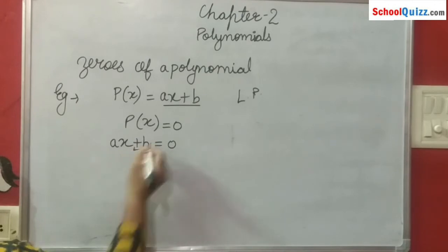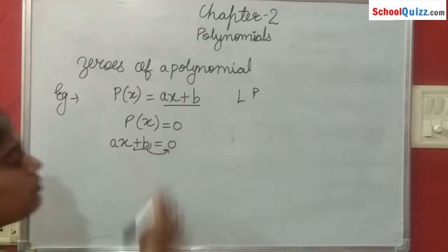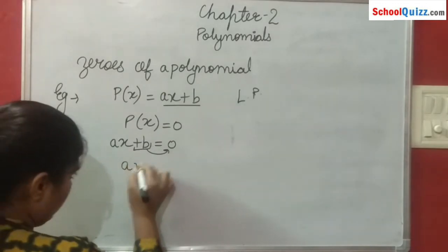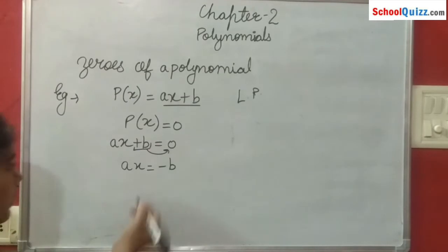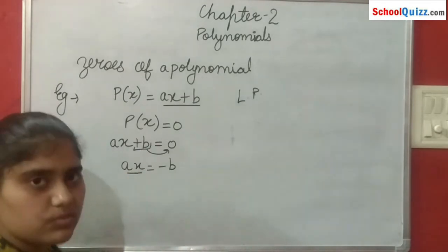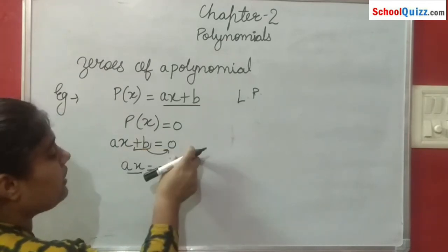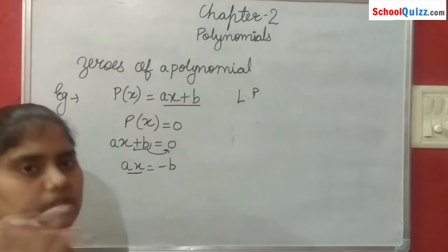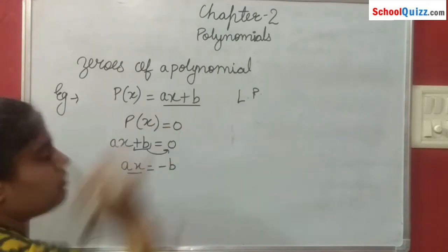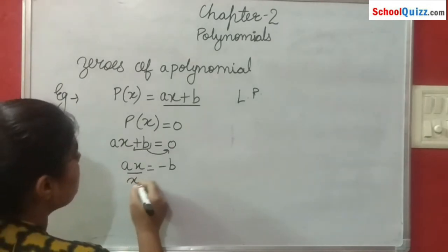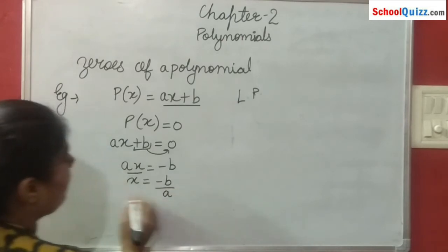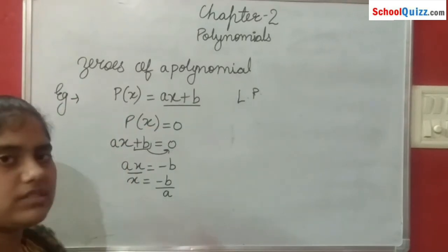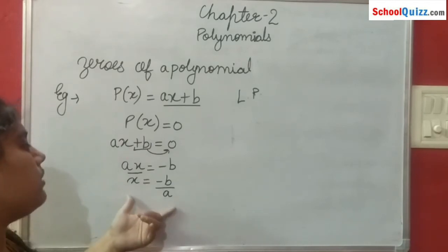Now the constant term B is on one side — it is positive B. When it moves to the other side it will become negative B, so Ax equals to minus B. Now Ax means A is in multiplication form with x. When multiplication moves to the other side it becomes division. So x equals to minus B upon A. So for any linear polynomial, its zero will be minus B upon A.